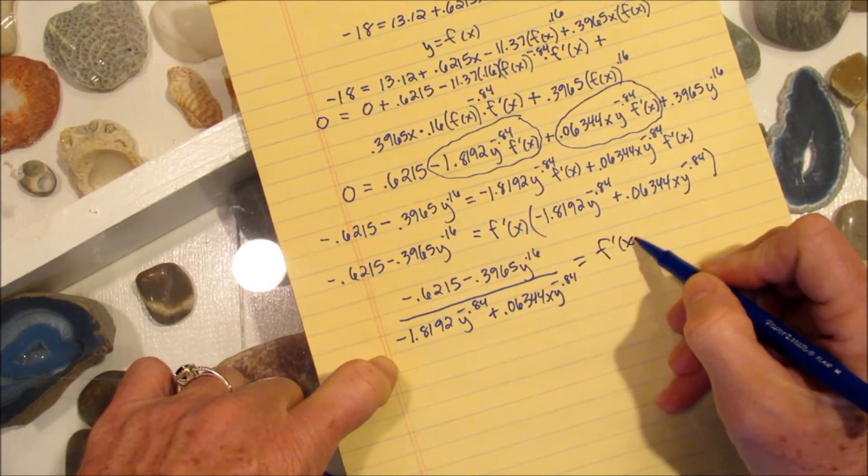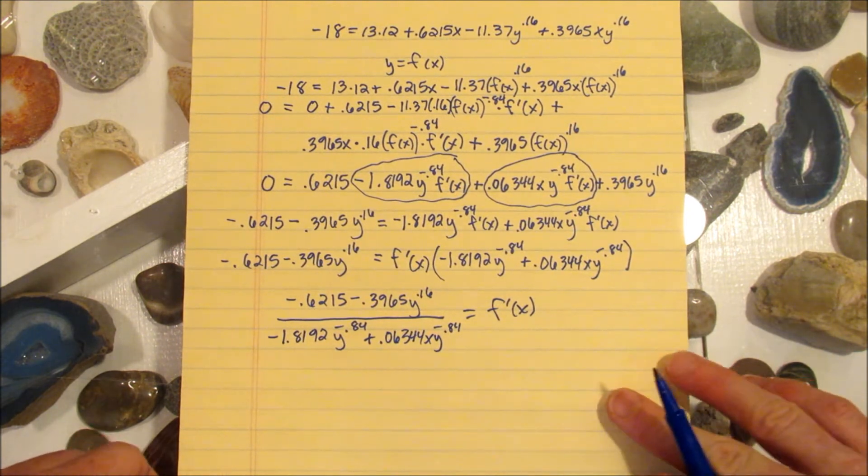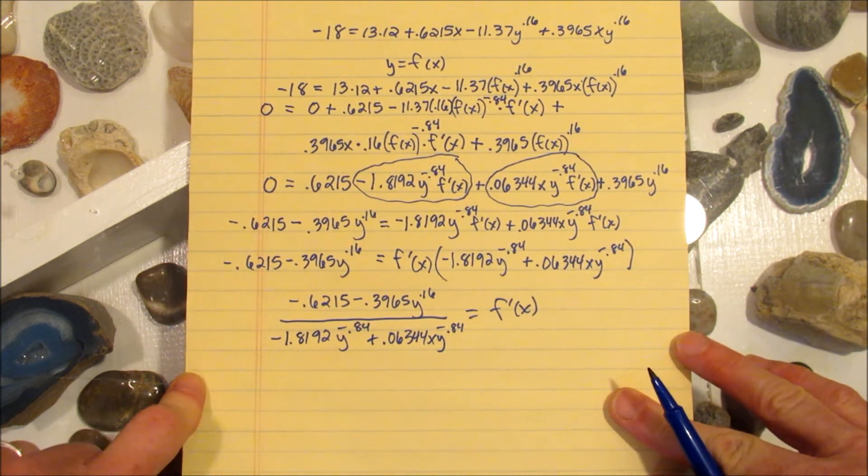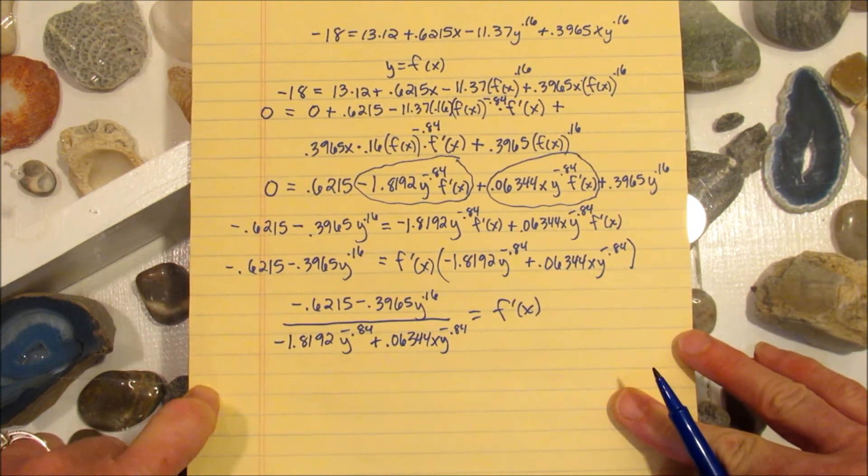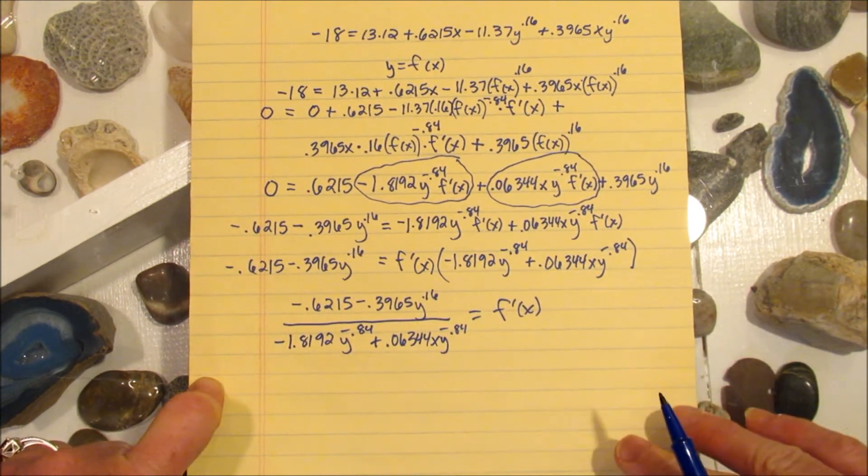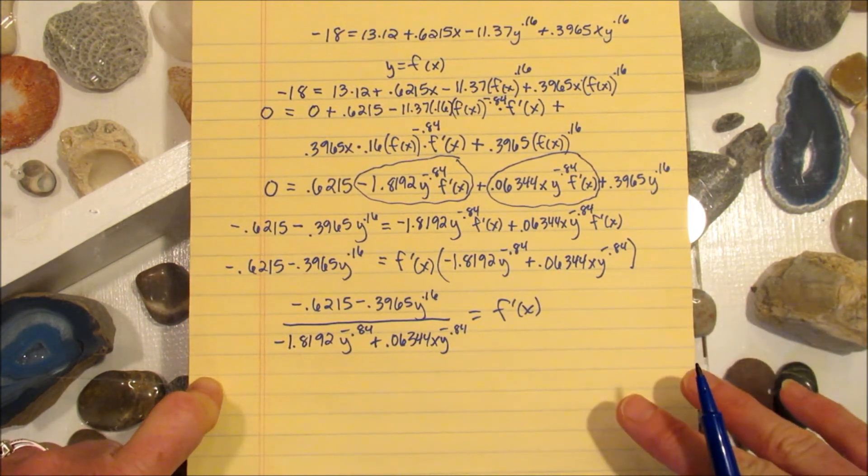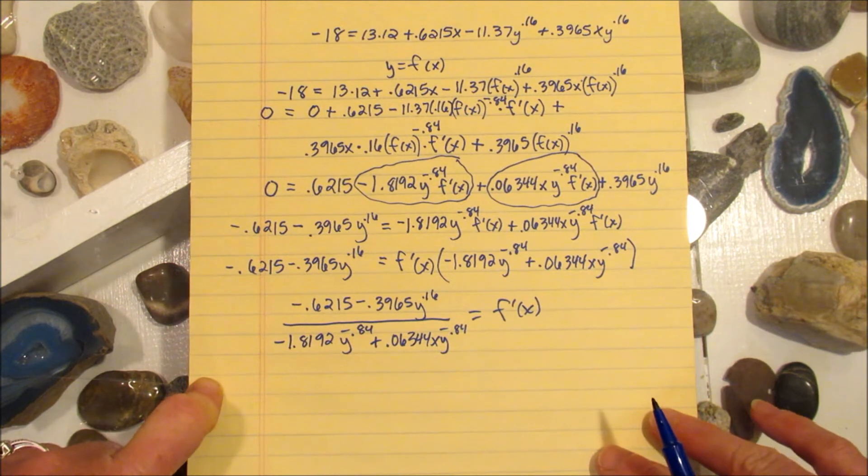And there is my formula for the derivative of that windchill function. So at any point, I could plug in the combination of temperature and wind speed, and I would get how the wind speed is changing with respect to the temperature changing.